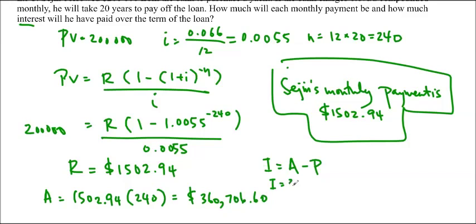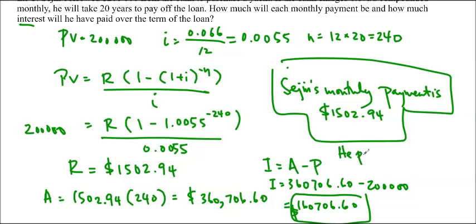So the interest is 360,706.60 minus 200,000, which is $160,706.60. He paid $160,706.60, which is why borrowing money is not good. You end up paying so much more than you would have had to. It's better to save than it is to borrow.